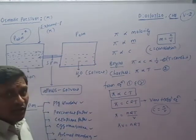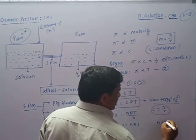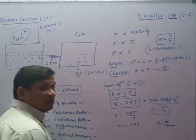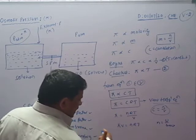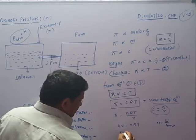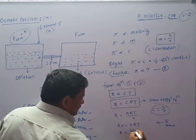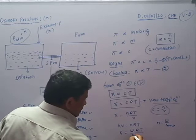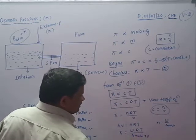In this equation, n is the number of moles. Number of moles equals weight divided by gram molecular weight. Substituting this, pi equals weight multiplied by R multiplied by T, divided by gram molecular weight multiplied by V.